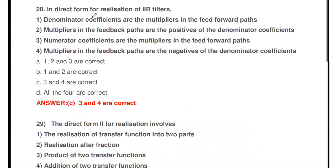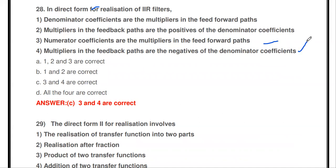In direct form realization of IIR filters: the denominator coefficients are not multipliers in the feed-forward path; the multipliers in the feedback path are not positive denominator coefficients. The correct answers are: numerator coefficients are multipliers in the feed-forward path, and multipliers in the feedback path are the negative of the denominator coefficients.